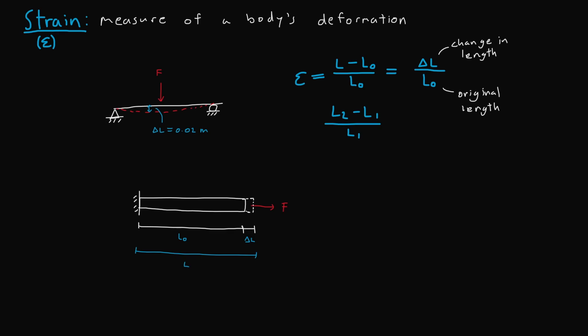As you can see, hopefully this is a much clearer representation of strain, along with its quantities. Once again, we can find the strain by knowing these quantities. So epsilon will be equal to L minus L naught over L naught.